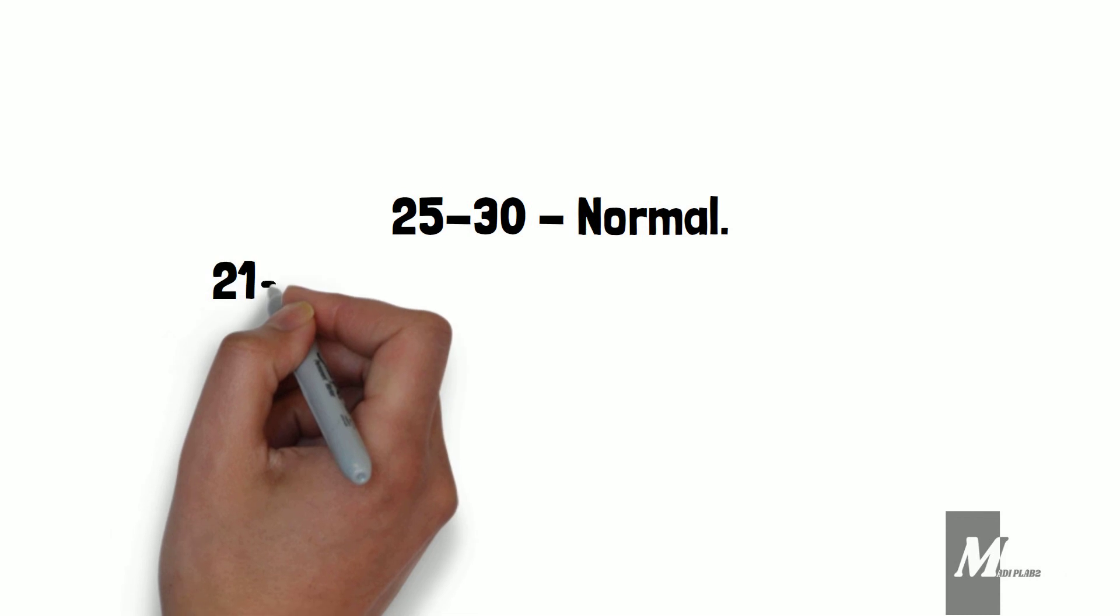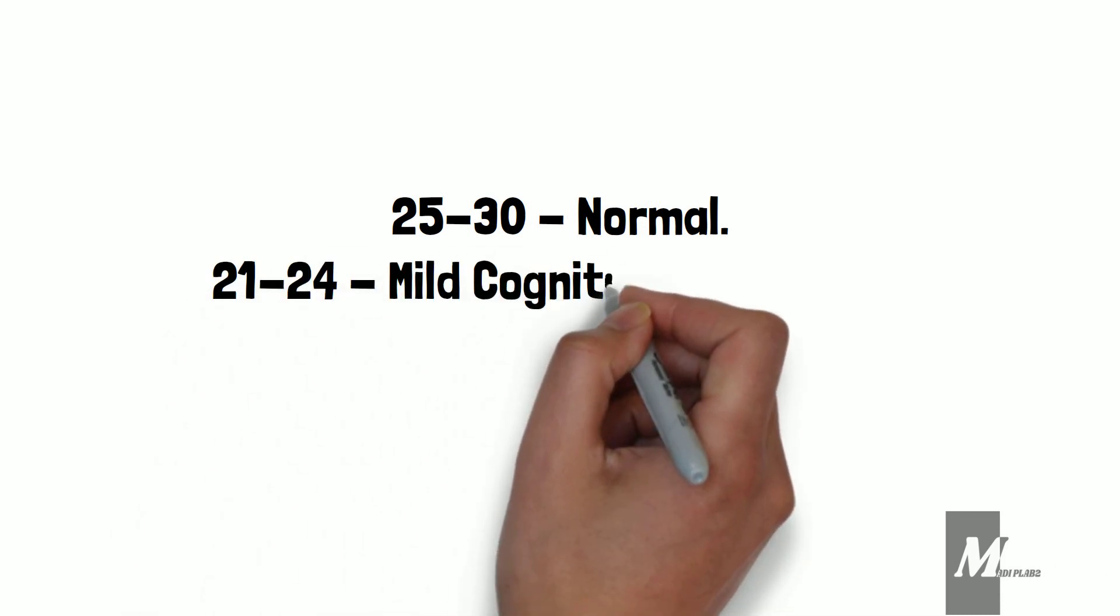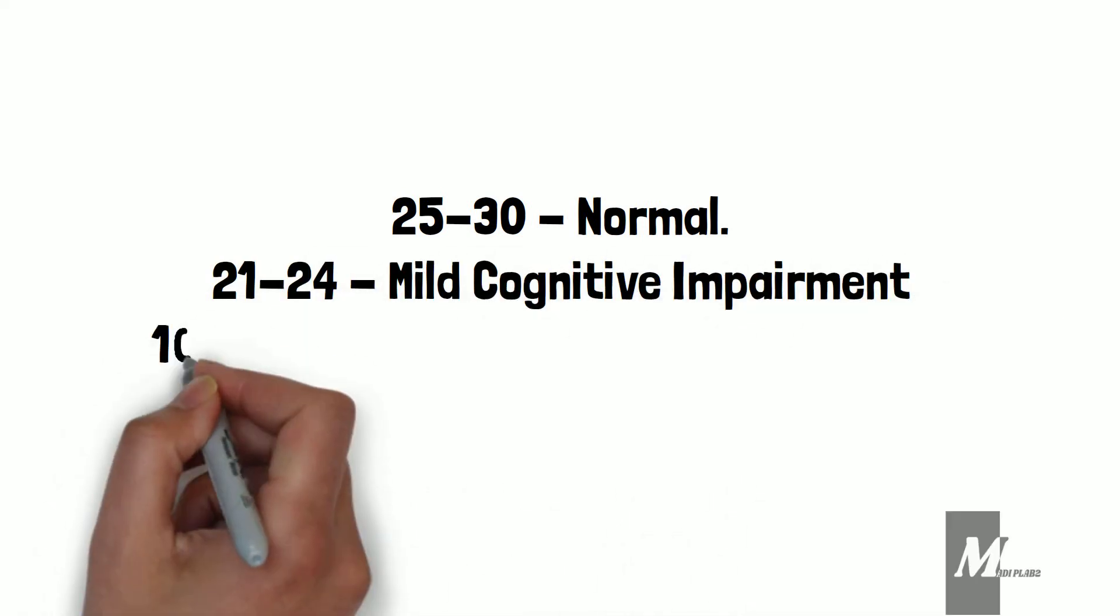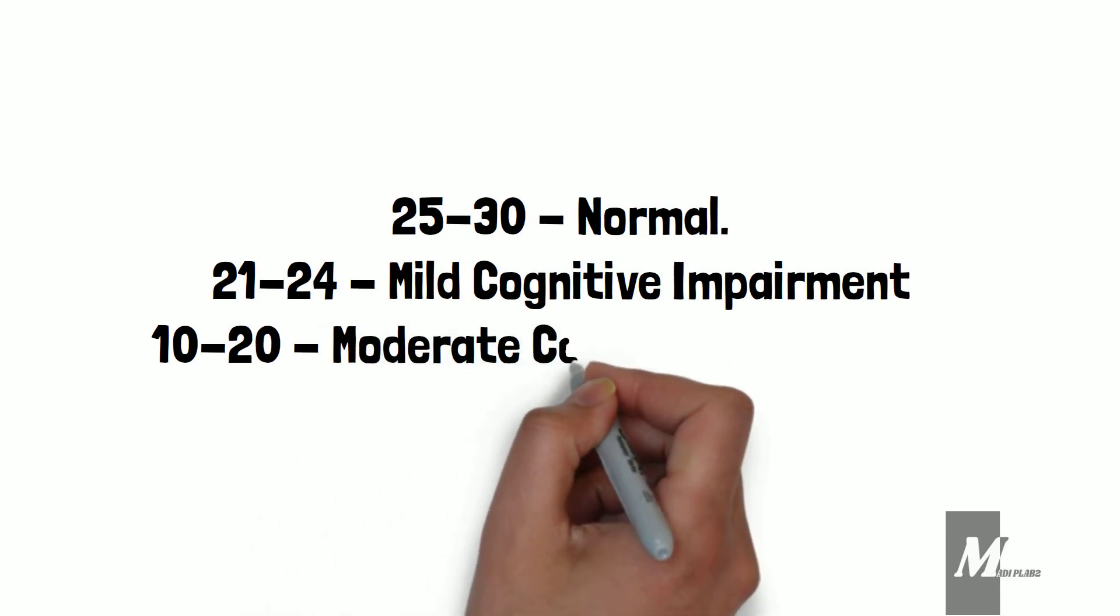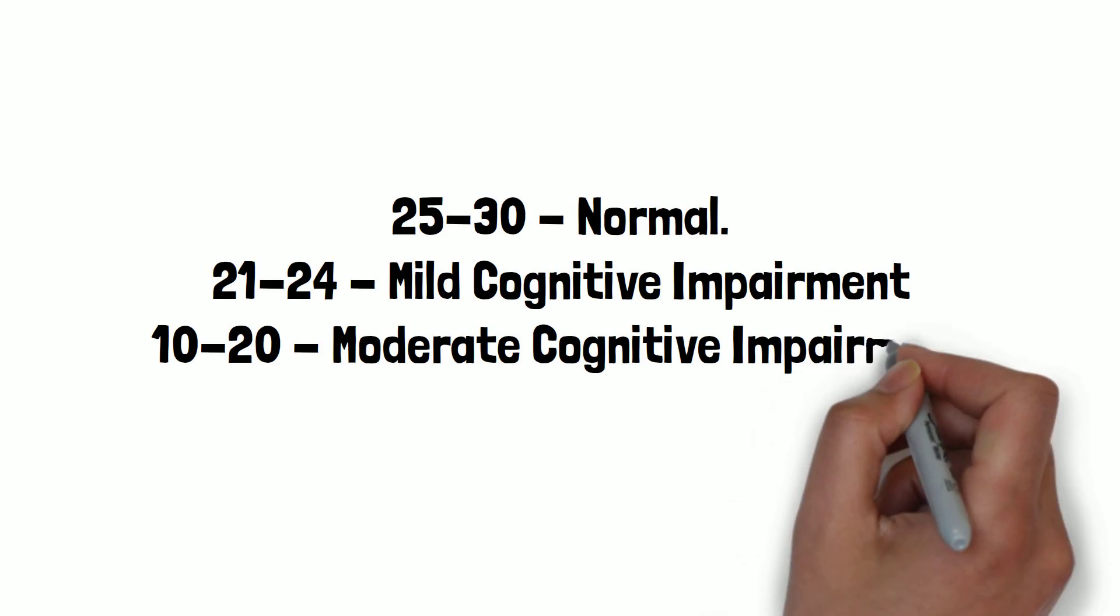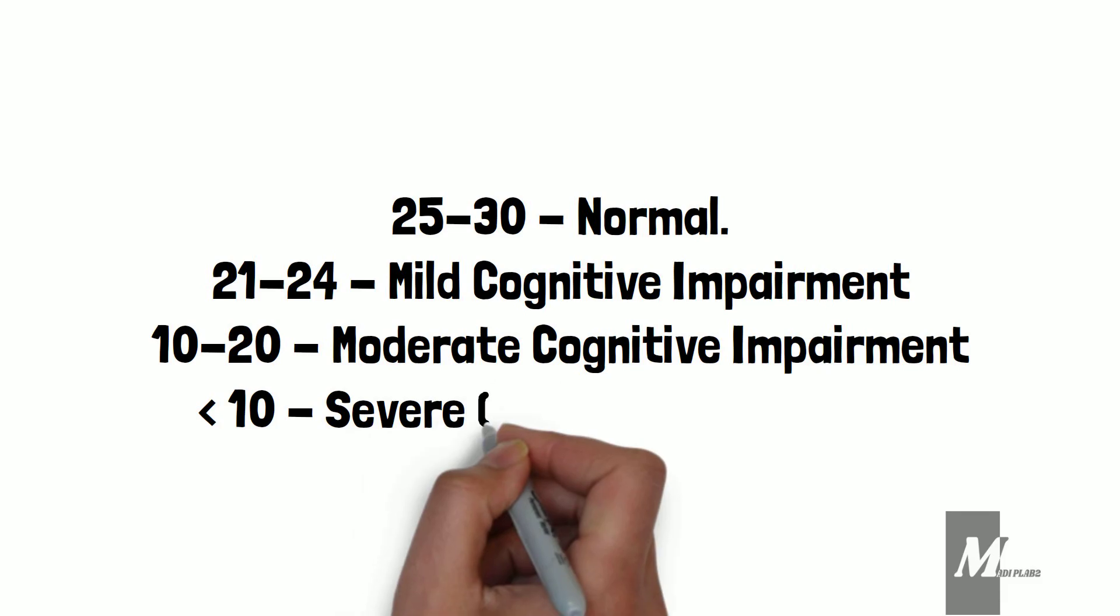Score 25 to 30: Normal. 21 to 24: Mild Cognitive Impairment. 10 to 20: Moderate Cognitive Impairment. Less than 10: Severe Cognitive Impairment.